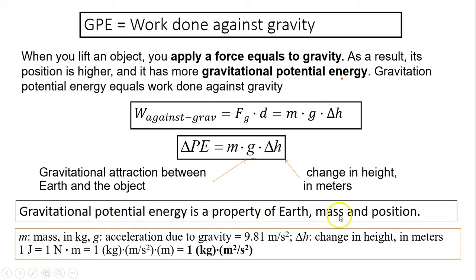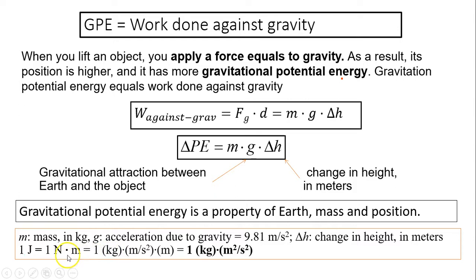Gravitational potential energy is a property of the Earth, mass, and position together. An object near Earth's surface has gravitational potential energy due to Earth's attraction; in outer space, far from a large mass like Earth, it won't have gravitational potential energy. The unit for gravitational potential energy is the joule: kg × (m/s²) × m = kg·m²/s² = joule.